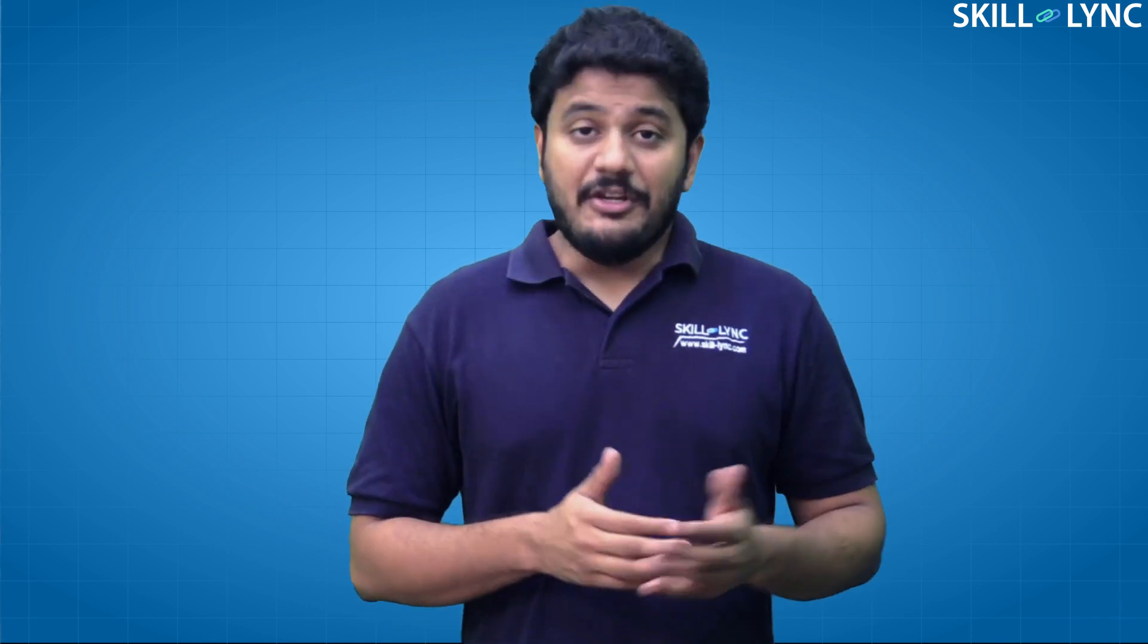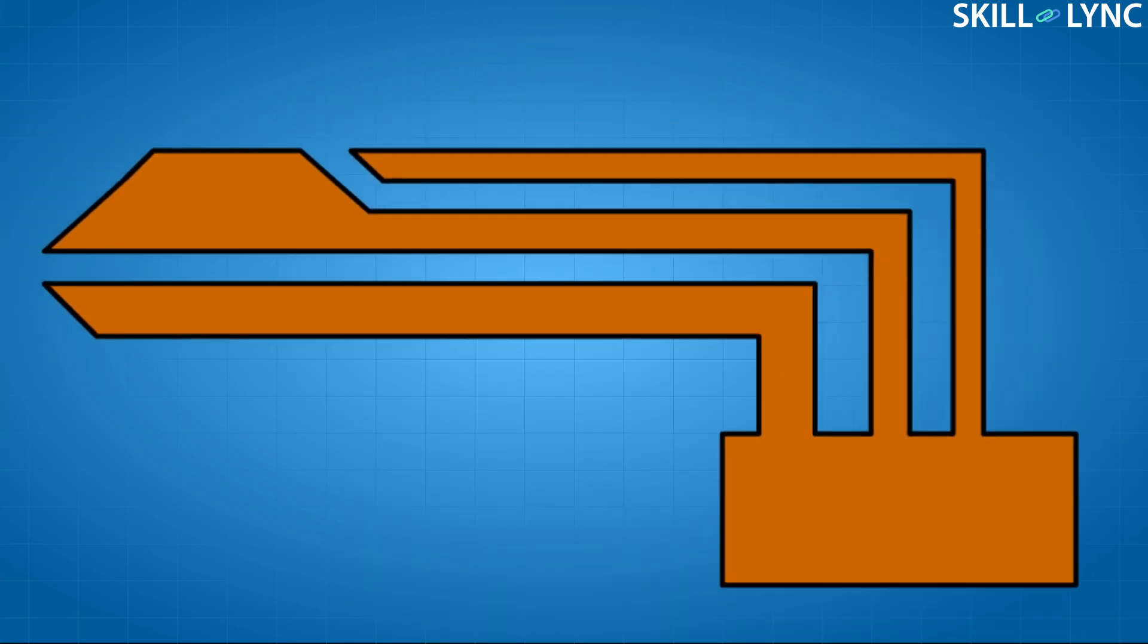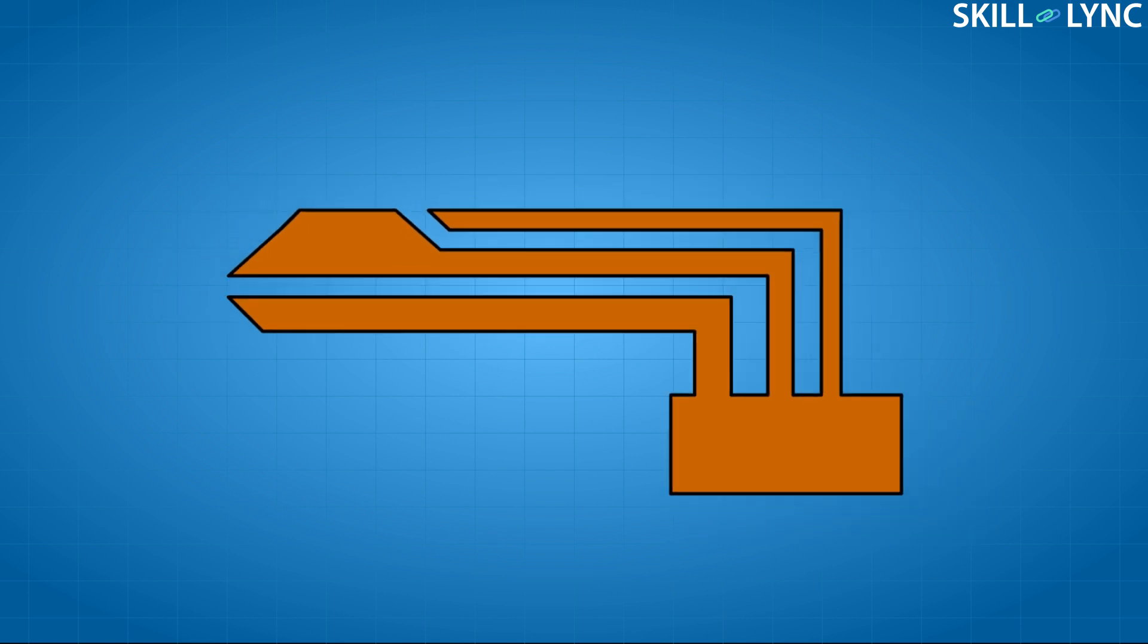The pitot tube is a very simple device which uses pressure difference to calculate velocity and altitude. The pitot tube consists of an L-shaped hollow tube which has two holes.